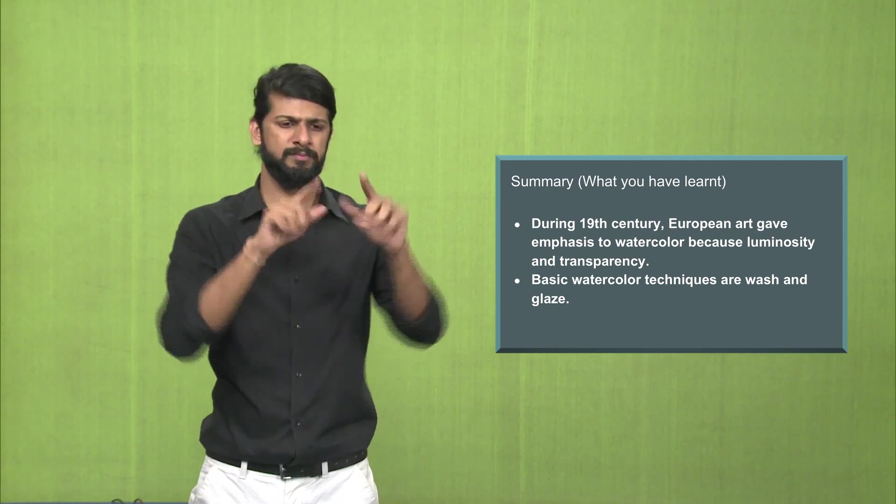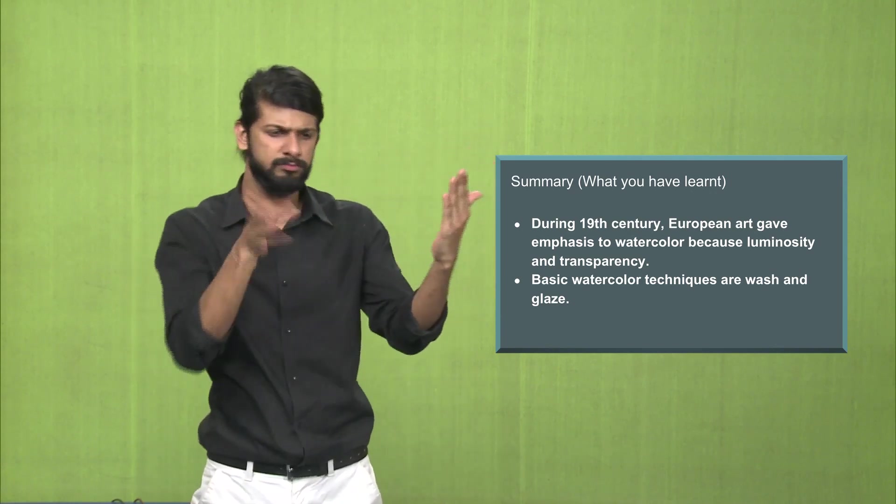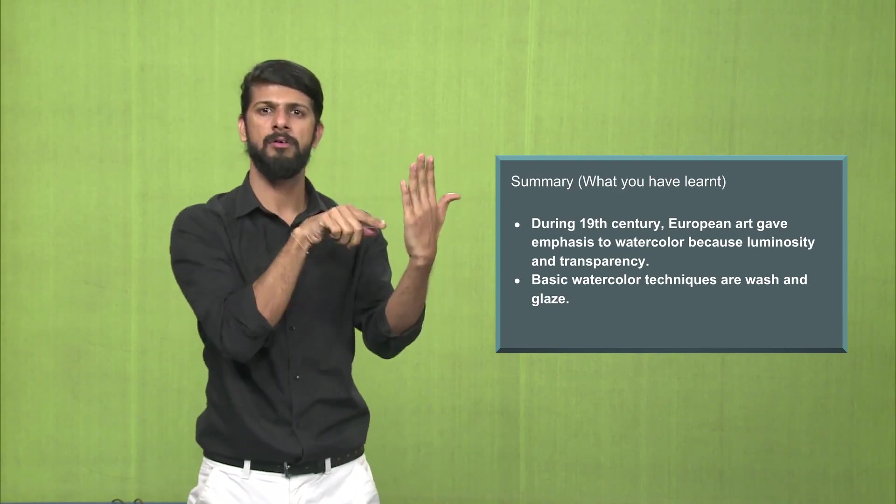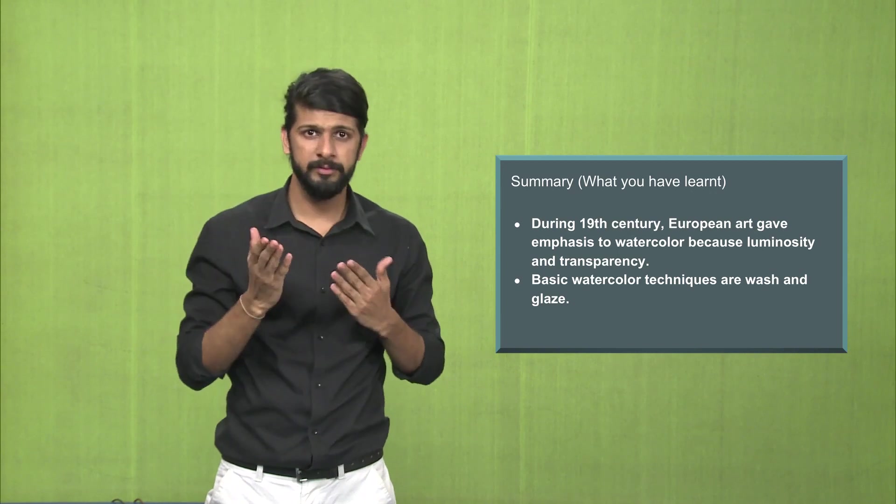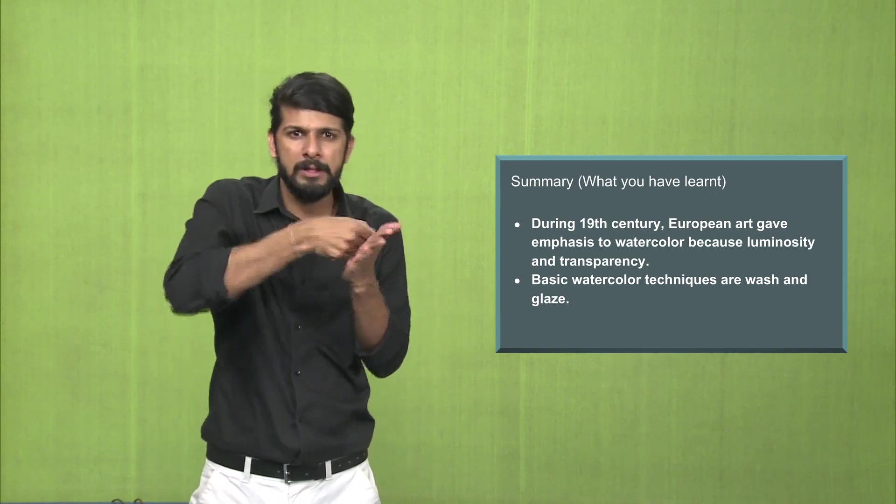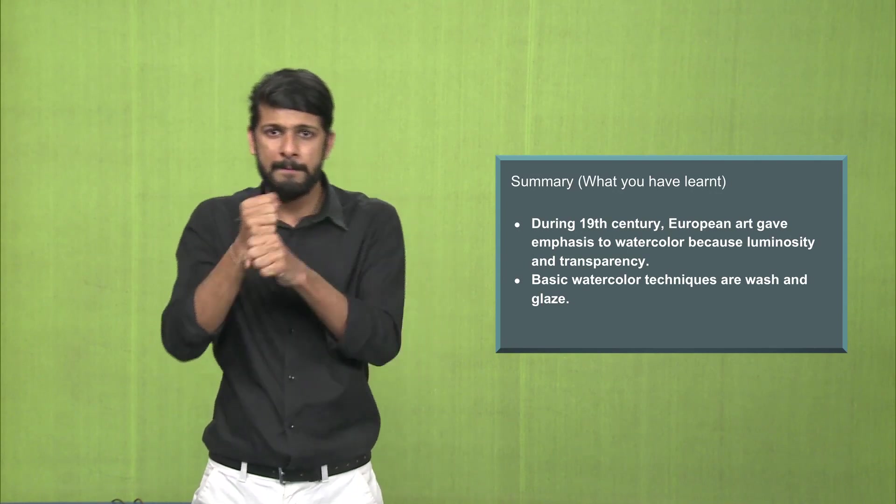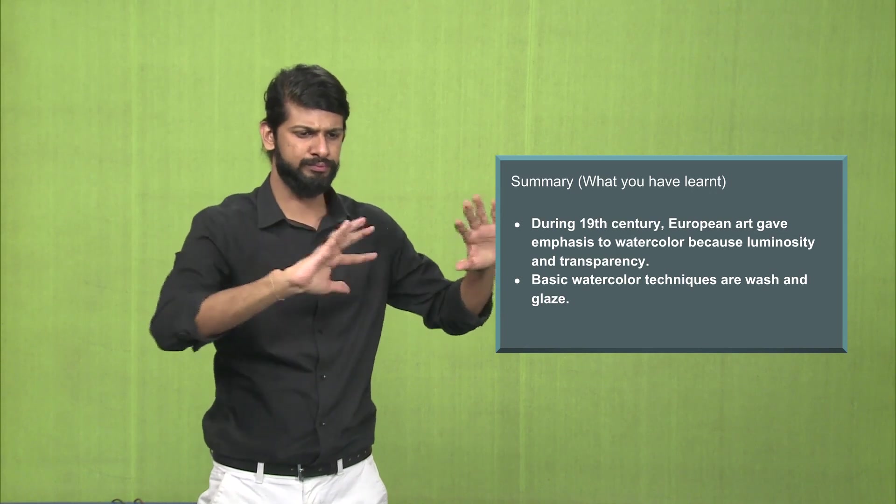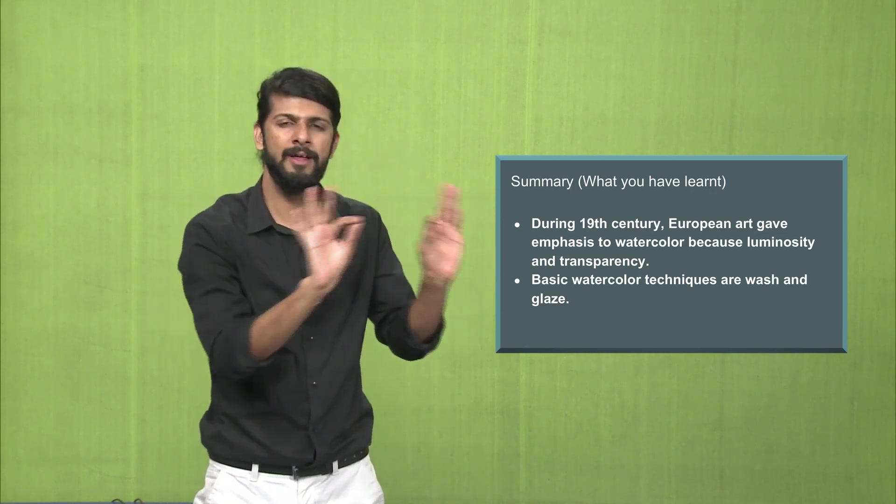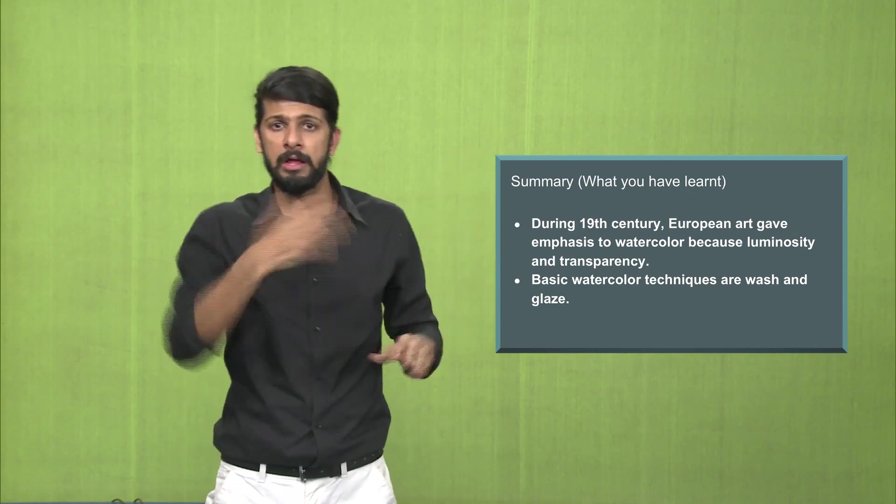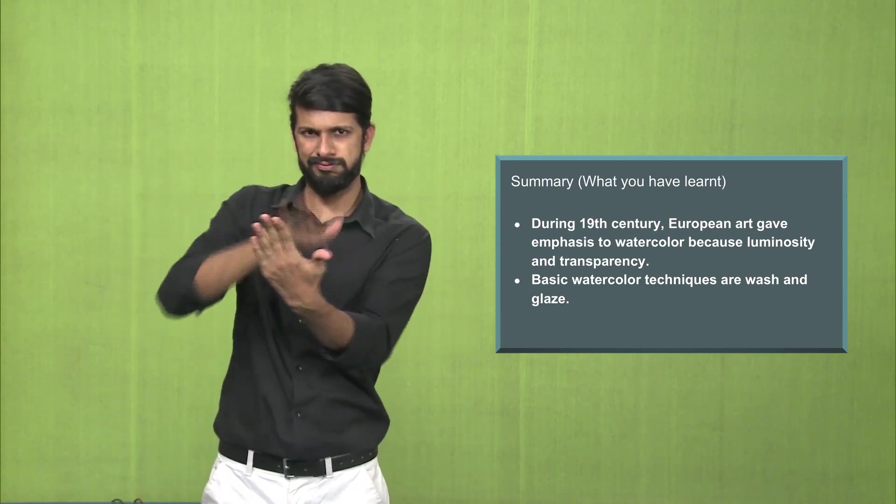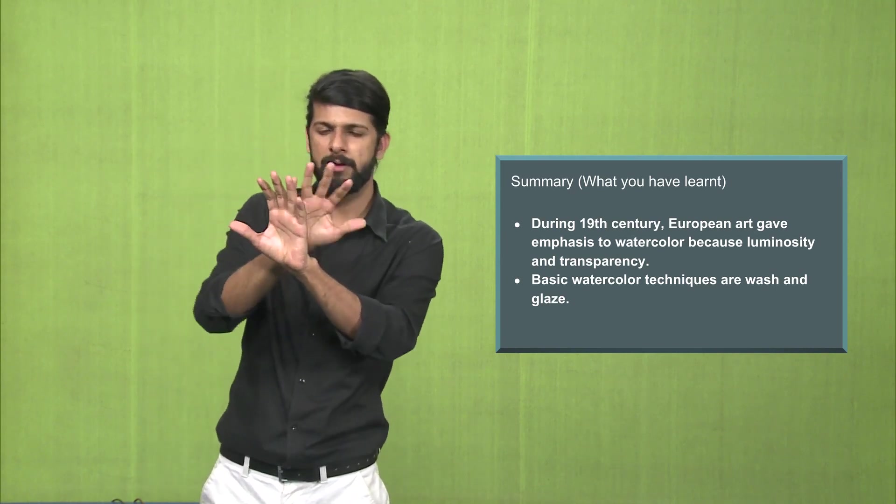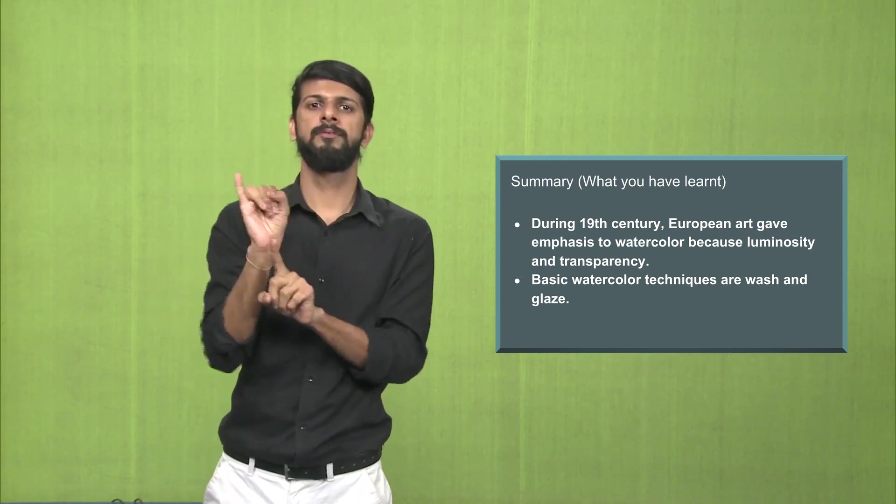During the 19th century, the European art gave emphasis to watercolor due to the transparency and the luminosity which watercolors gave. And that is why it became very famous in Europe. Watercolor techniques basically are of two kinds. First is the wash and the second is the glaze. Wash technique is the use of diluted colors to get the semi-transparent look, while the glaze is a repeated use of paint over a previous layer of paint which gives a texture and a shine, kind of 3D.